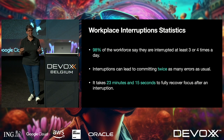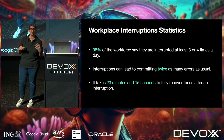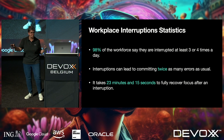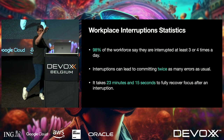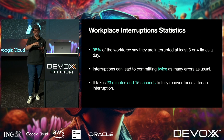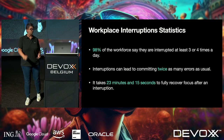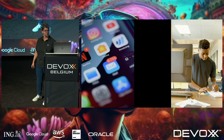It takes 23 minutes and 15 seconds — very precise — to fully recover focus after an interruption. I assume that's some kind of average with a gradual ramp back up to speed. But the point is: interruptions are real, they cost time, they cost errors, and it takes a long time to recover cognitive flow. And for developers it's even more complicated, of course. So what interrupts us? Things — and people.